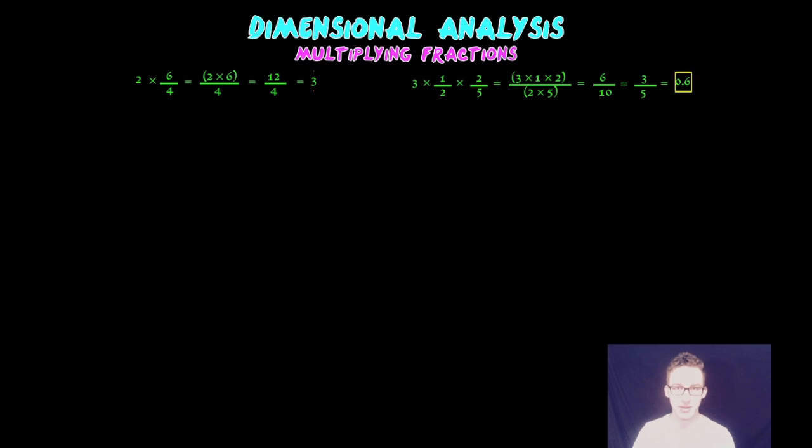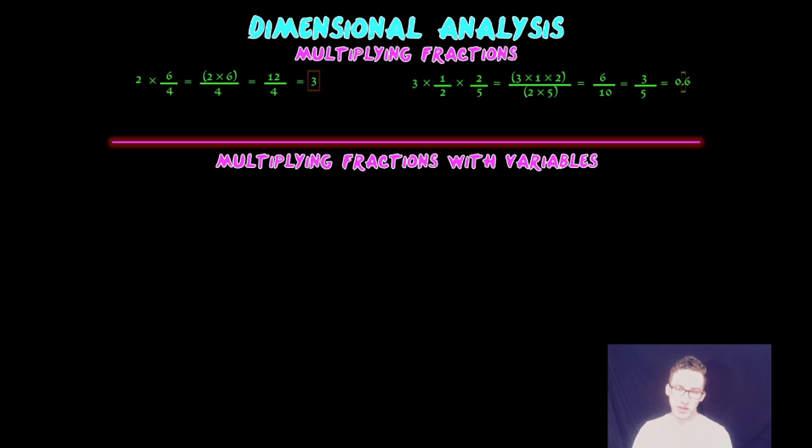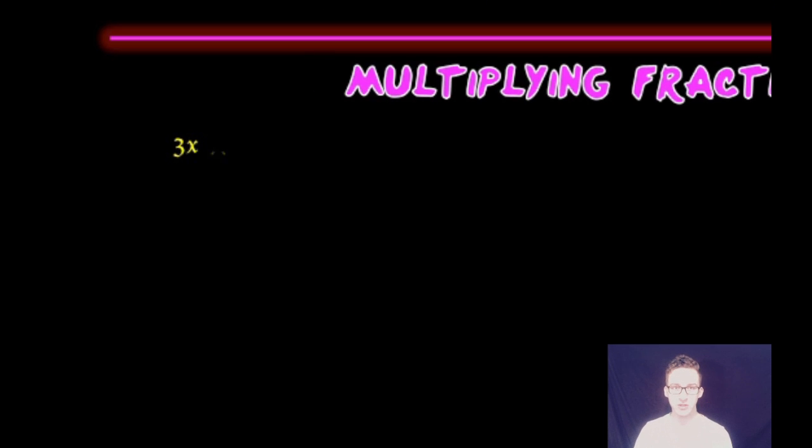But we're going to crank it up a notch and take us to algebra level and look at multiplying fractions that have some variables in it. So let's start out a little easy. We're going to do 3x times eight over 2x. Same principle applies here.